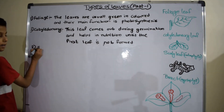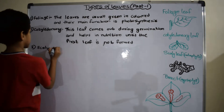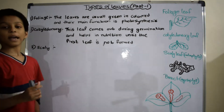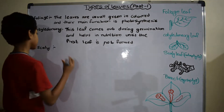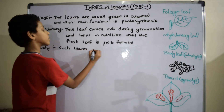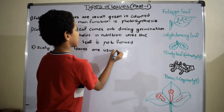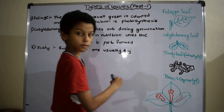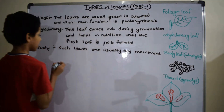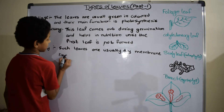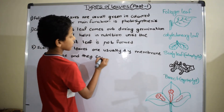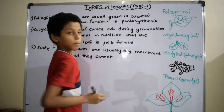Third one is scaly leaves. Such leaves are usually dry and membrane-like, and they cannot perform photosynthesis.